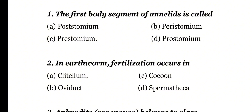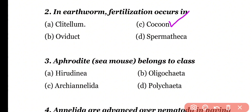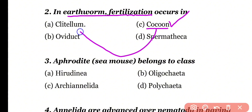Question number 2. In earthworm, fertilization occurs in: clitelium, cocoon, oviduct, or spermateca. Correct answer is option C. Fertilization in earthworm takes place within the cocoon, and the cocoon is secreted by the clitelium.